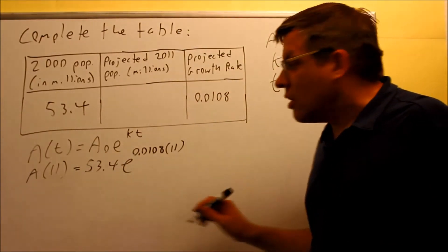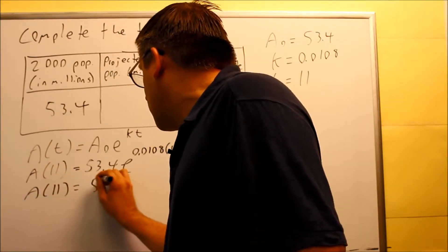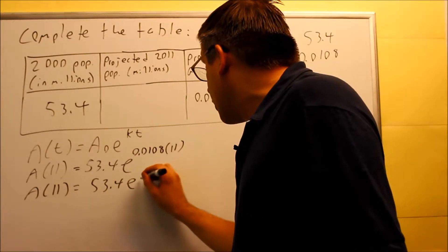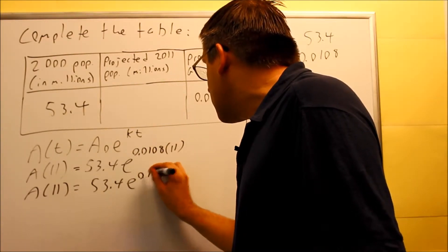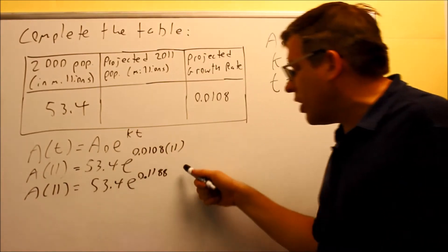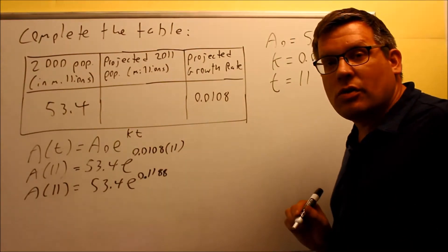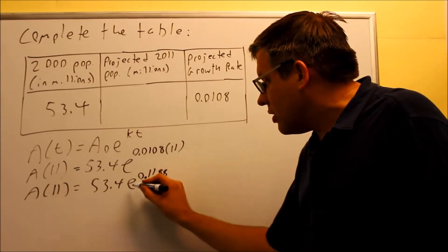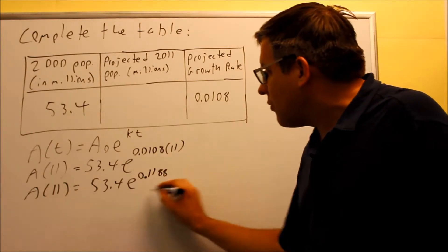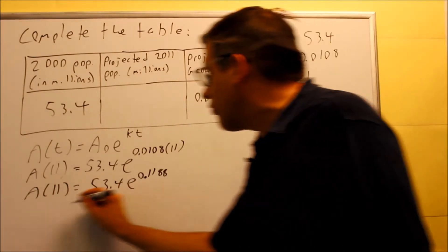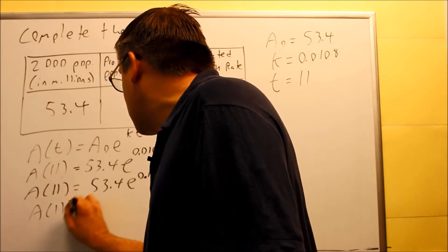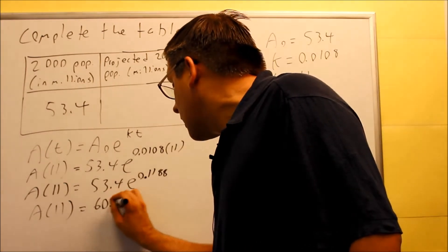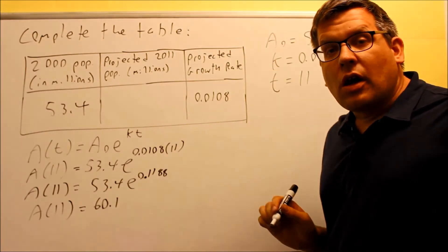Now I'm just going to simplify it. A(11): start with the exponent — multiply 0.0108 by 11, and you get 0.1188. Then put e^0.1188 into the calculator using the e above your LN button, multiply that by 53.4, and you should get 60.1 as your answer.